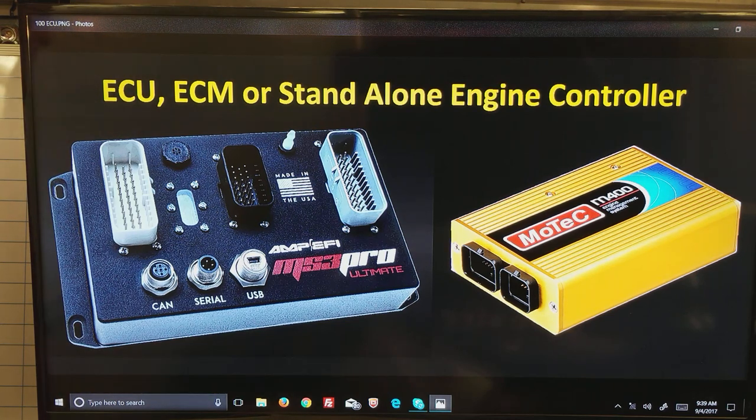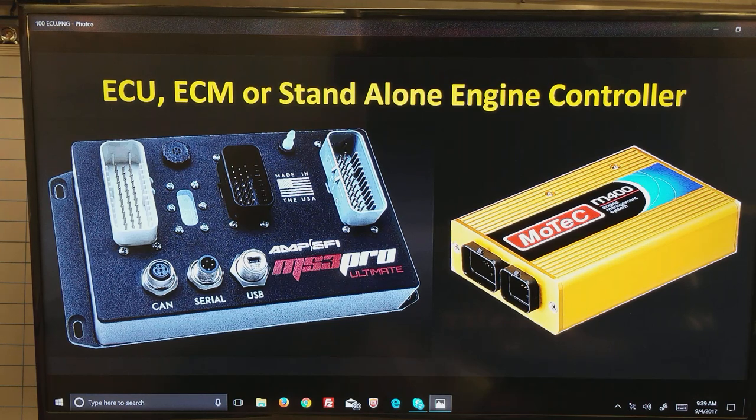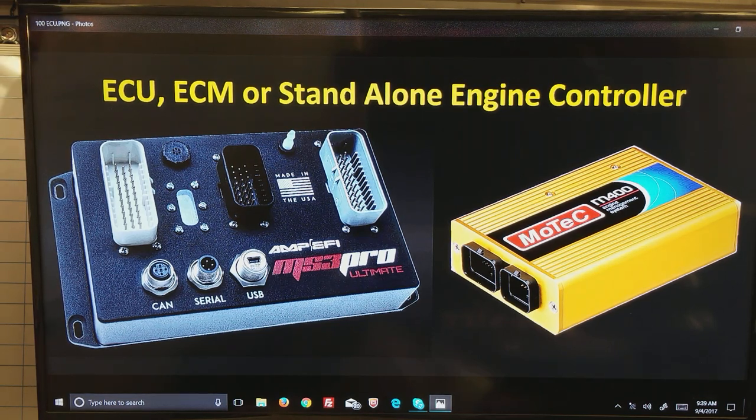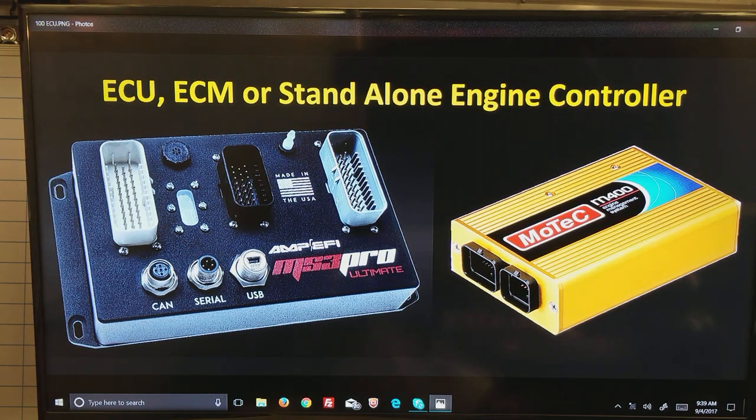Both of these devices are in the range of about six inches by an inch and a half by maybe four inches. Commonly they have maybe 30 or 40, 50 pins depending on the unit. The pins are for input and output. Inputs are things like temperature sensors, throttle position sensors. On the output side is injector drivers and possibly boost controllers.